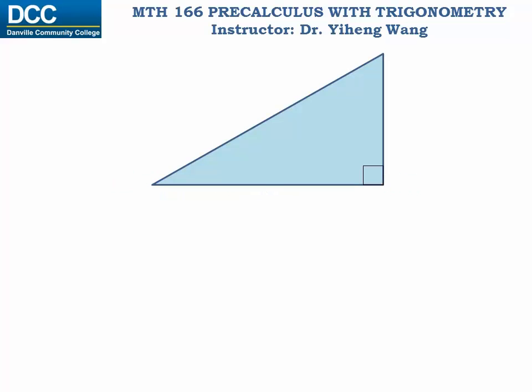Here we have a right triangle, and one of these two acute angles is called theta. We know that the longest side of the right triangle is called the hypotenuse, and among the other two sides the one that is next to angle theta is called the adjacent side, and the side that is opposite to angle theta is called the opposite side. Now we are ready to define the six trigonometric functions for angle theta.